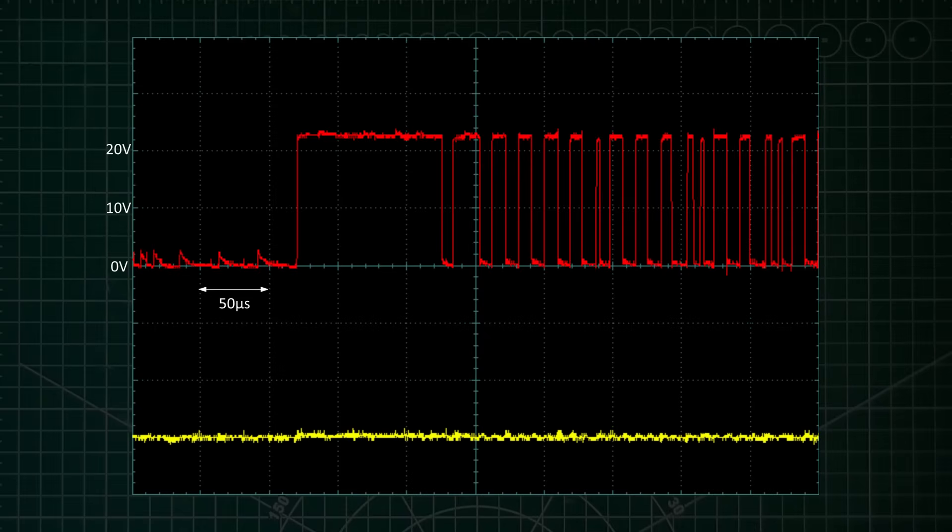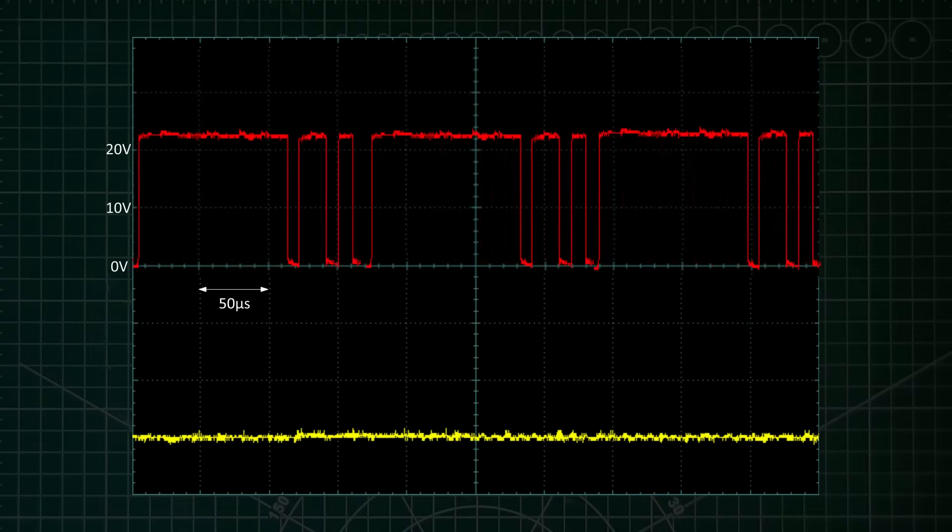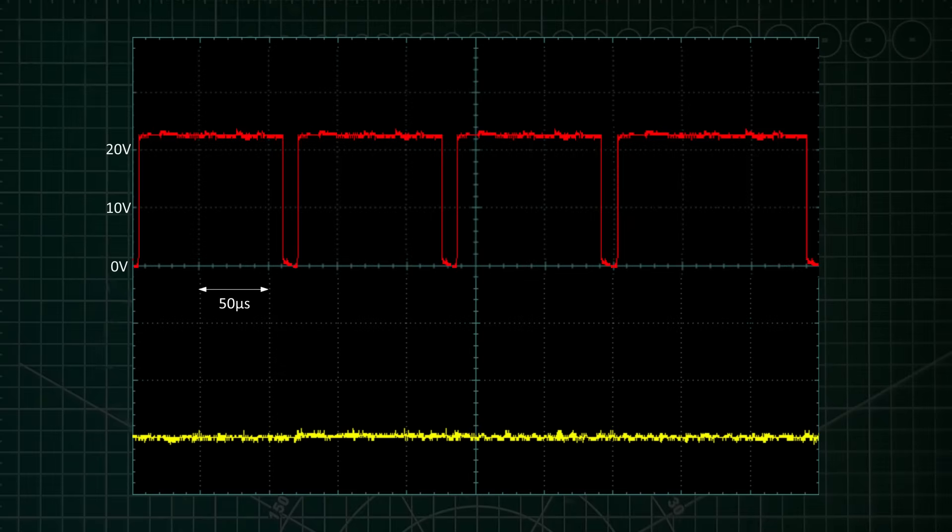The faster you step the motor, the more frequently these long pulses occur. Until you reach a point where the full voltage of the supply needs to be applied almost all the time. And if you go beyond that, the torque of the motor drops rapidly and it stalls.